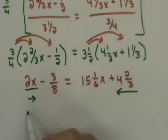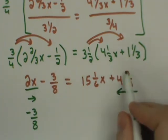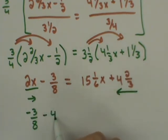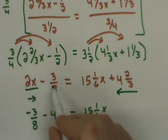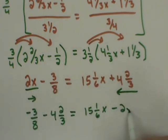Write the original term first, negative 3 eighths. Migrating term comes over, it's positive here, so it comes over as a negative, 4 and 2 thirds. Equalling 15 and 1 sixth x, the 2x comes over as a minus 2x.